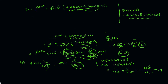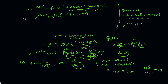Applying the sin(A+B) formula, y1 equals root over 1 plus a square, into e to the power ax plus b, into sin of alpha plus x. So y1 is written as: (1+a²)^(1/2) · e^(ax+b) · sin(α + x).